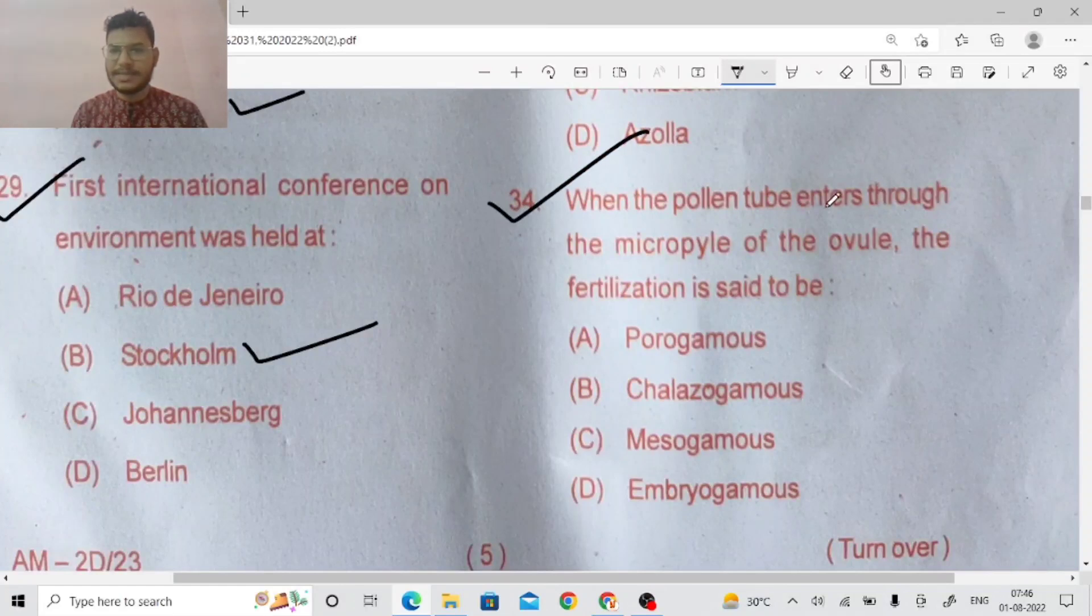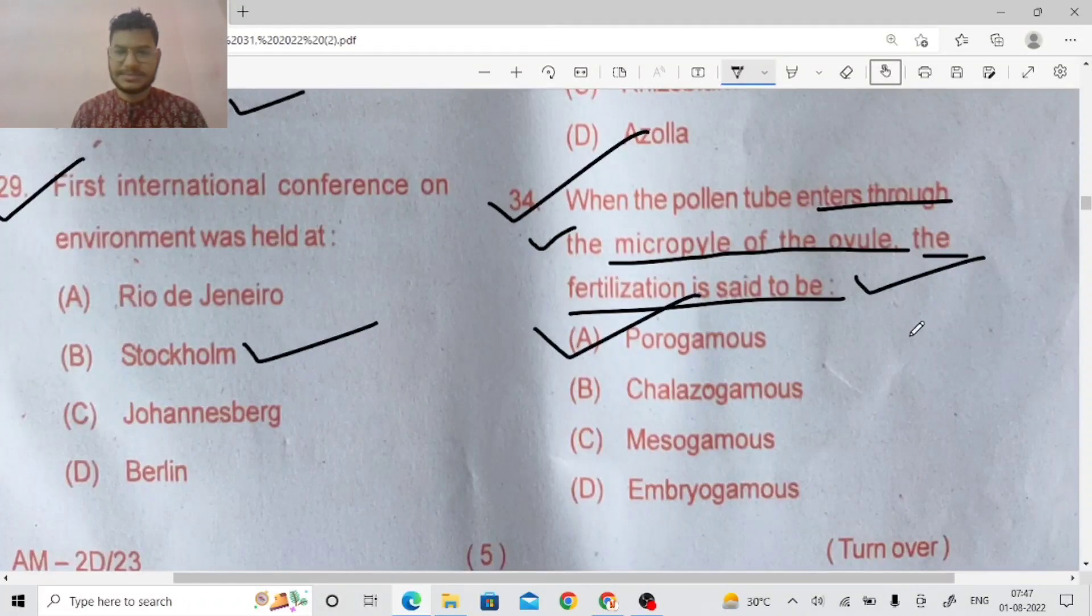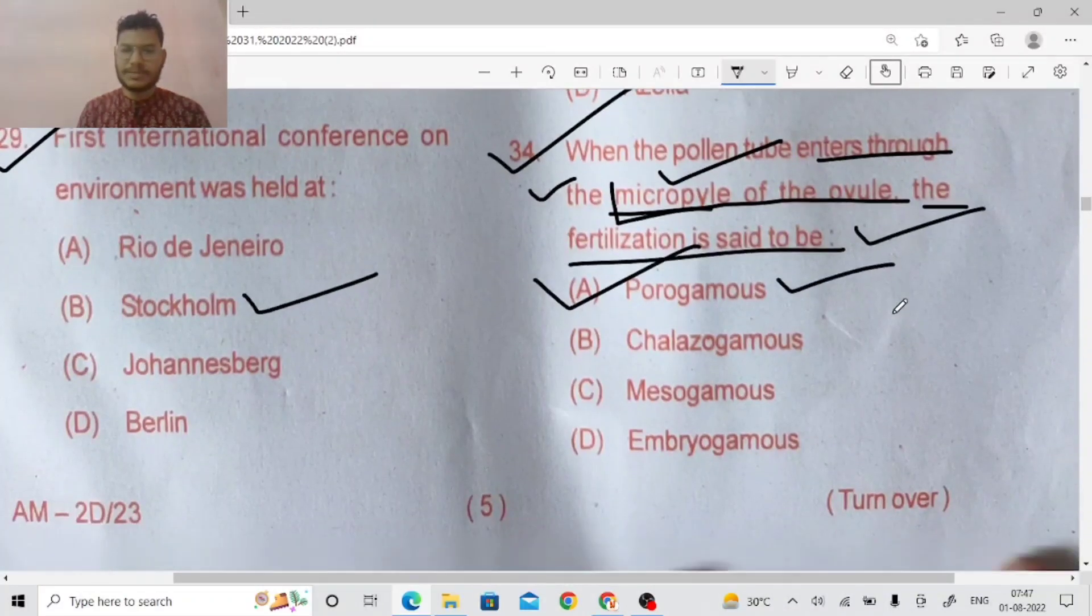When the pollen tube enters through the micropyle of the ovule, the fertilization is said to be, it is called porogamous. Chalaza end and micropyle end, there are two ends. Normally micropyle end enters the ovule, the pollen tube which is known as porogamous.